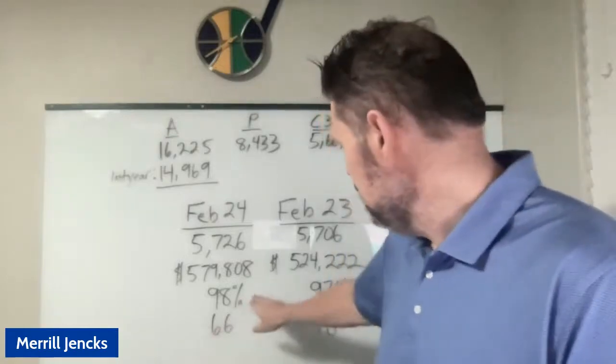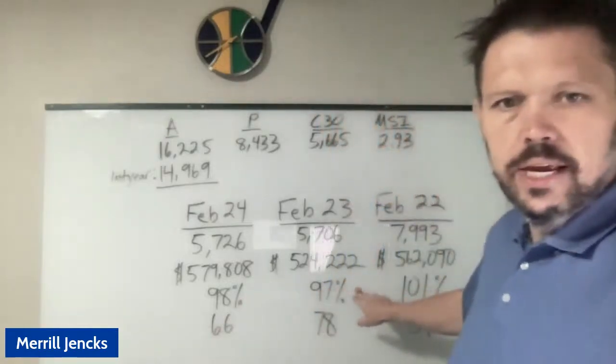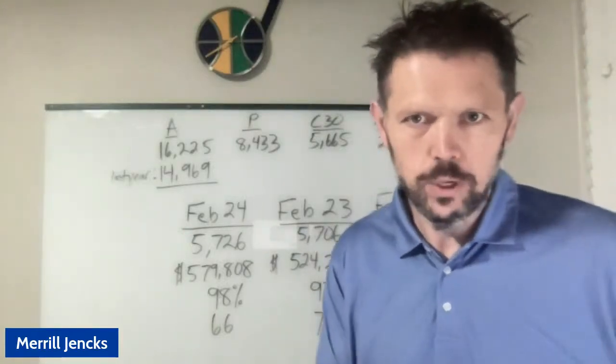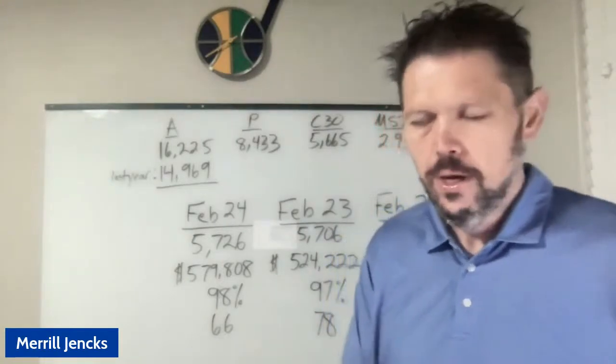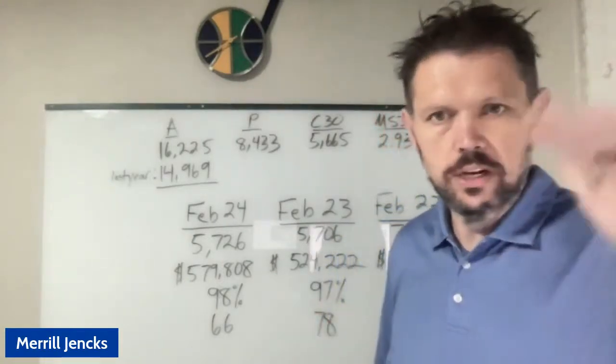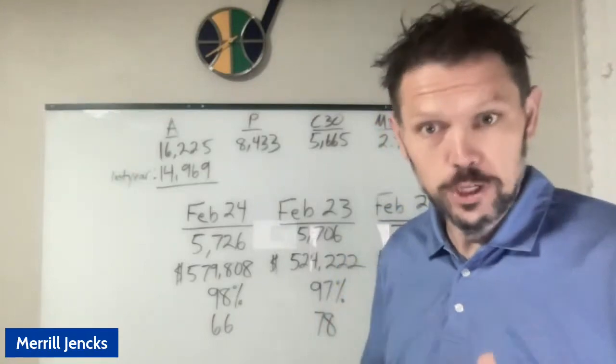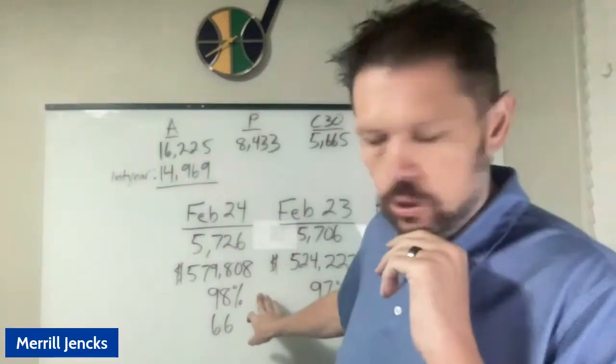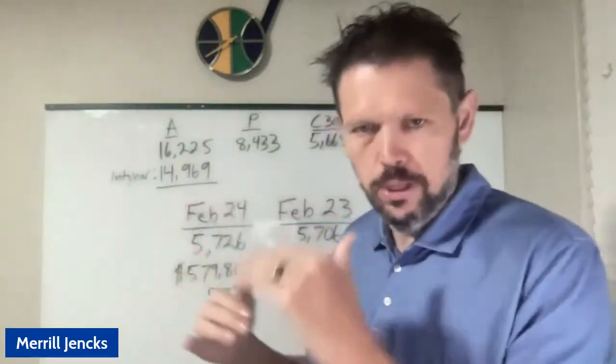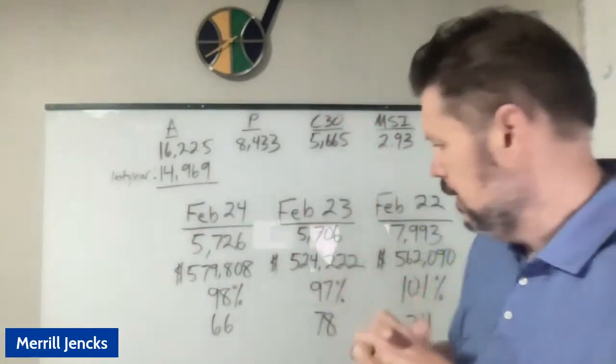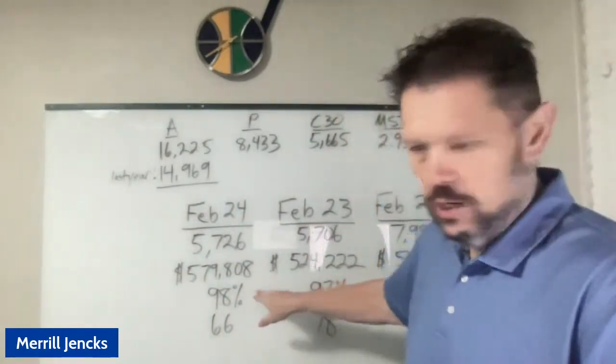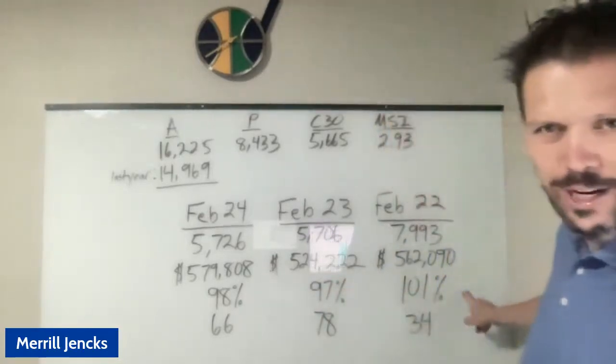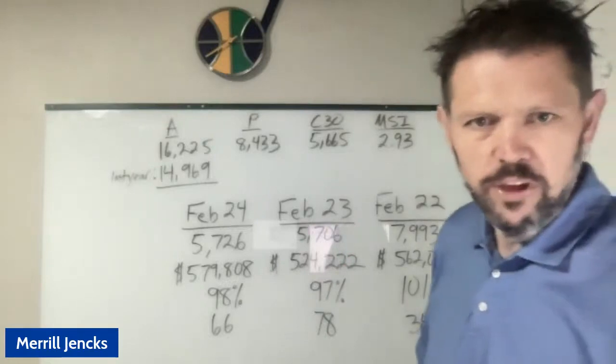These percentage numbers is a sales to list price ratio. How close was the sales price in comparison to what the seller was asking for the home? This metric can be a little bit misleading because many times sellers did have to reduce their price off of the original price. This isn't the original sales price to list price ratio, it's just the list price that it was at the time that it went under contract. This year we're at 98%, last year it was at 97%, and in 2022 it was actually at 101%, homes were selling above the asking price.